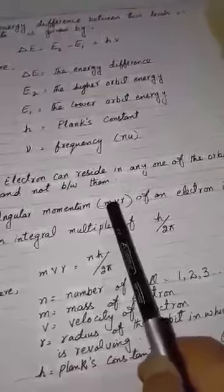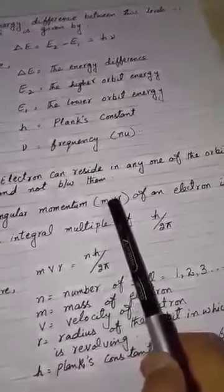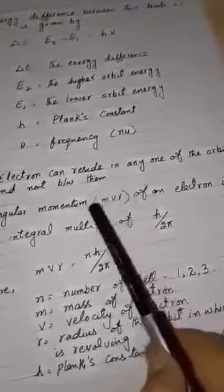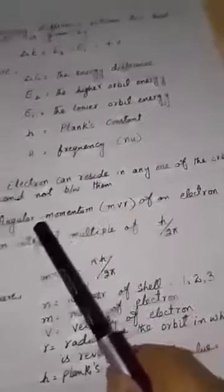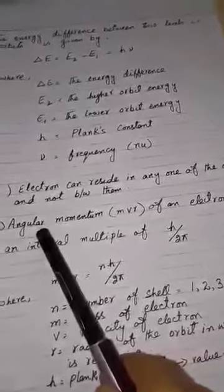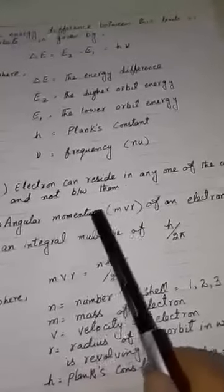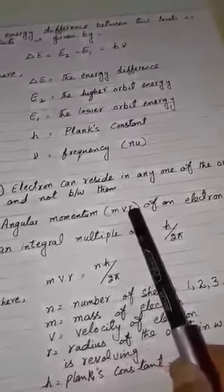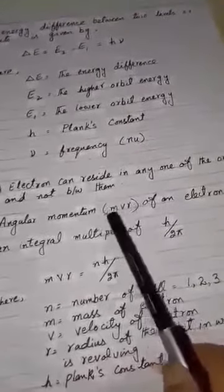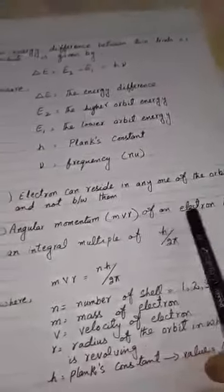Simple momentum is the product of mass and velocity only, but when it comes to a circular motion then we take the radius of the circle also. So we calculate the angular momentum, the product of mass, velocity, and radius of a shell in case of an electron, which is angular momentum, is an integral multiple of h by 2π.